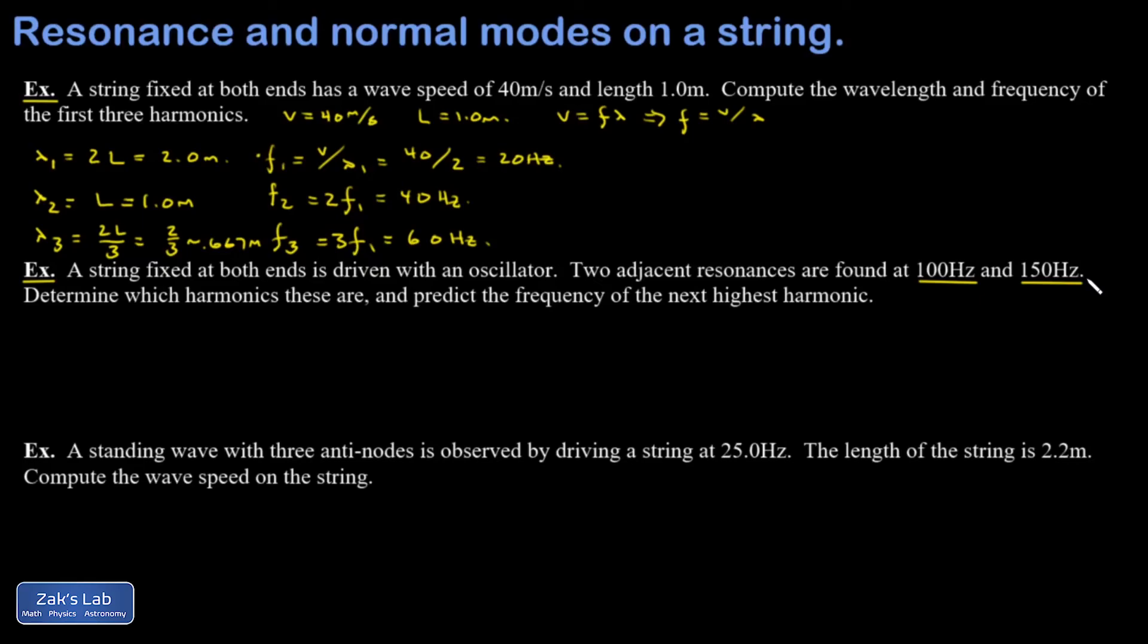Determine which harmonics we're looking at and predict the frequency of the next one. So the key here is to just remember that the nth resonant frequency is given by n times the fundamental. So the difference between any two adjacent resonant frequencies is going to be equal to the frequency of the fundamental here. And if that's not clear, I'll just illustrate how it works out.